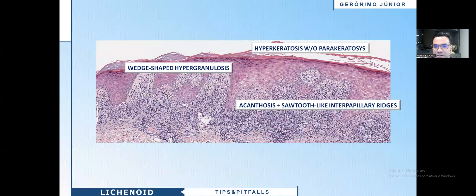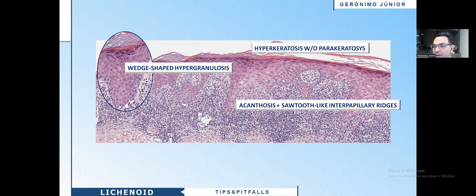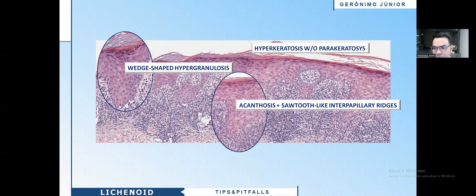In our case, we see hyperkeratosis without parakeratosis, hypergranulosis — you see here a wedge shape of the granular layer — and the epidermis is hyperplastic with sawtooth-like interpapillary ridges, as you can see here.